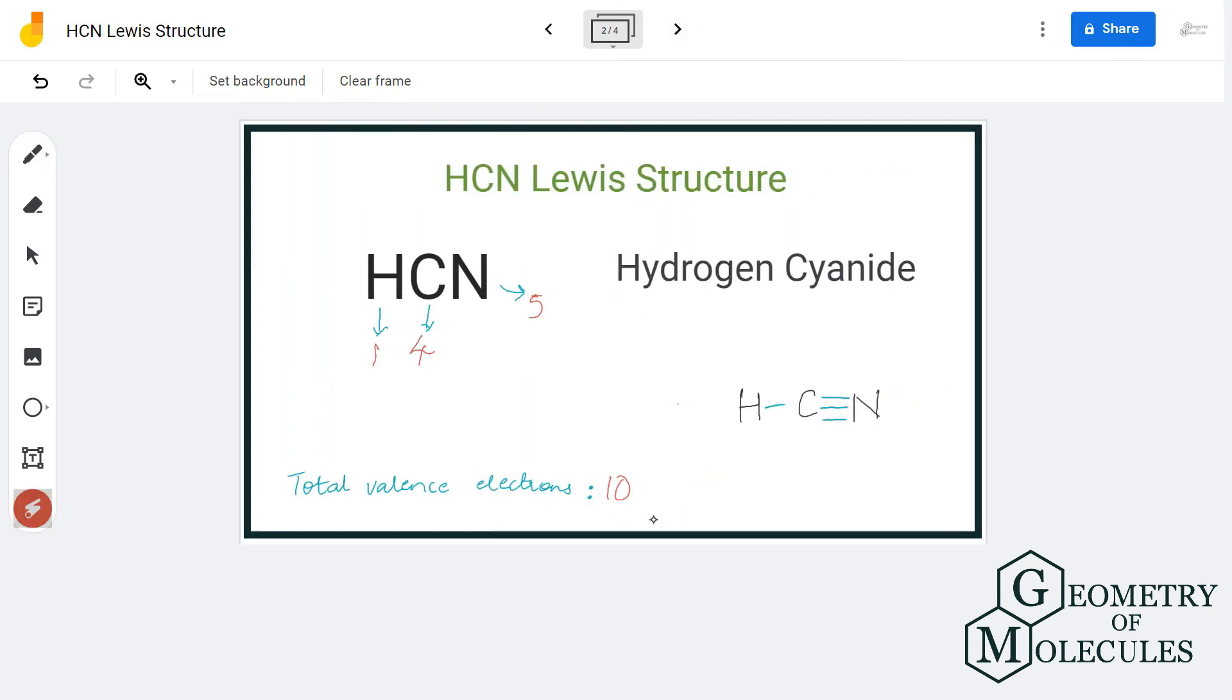Now we shall again count the number of valence electrons for each atom. Hydrogen has two, carbon has eight, and even nitrogen has eight.